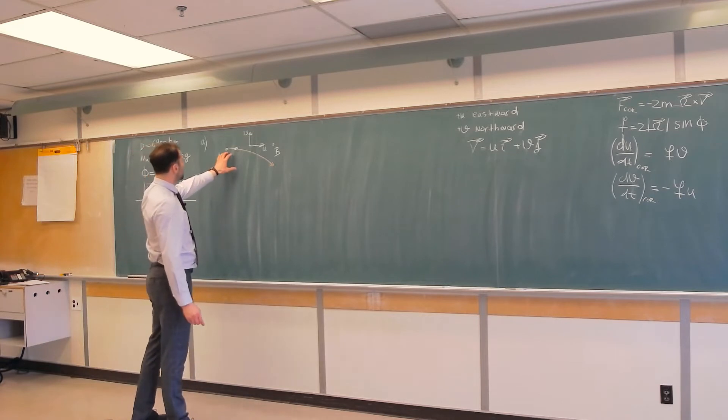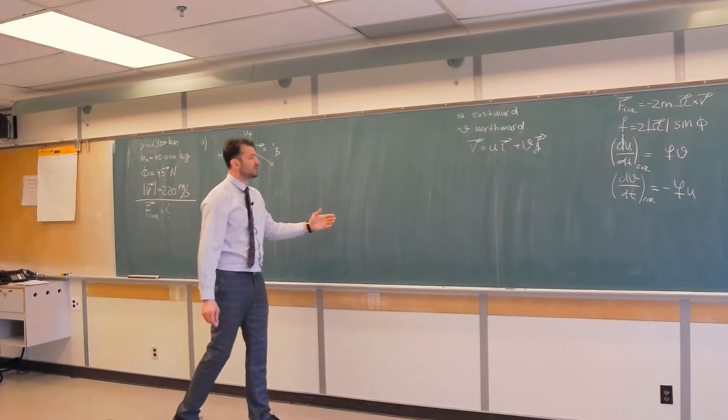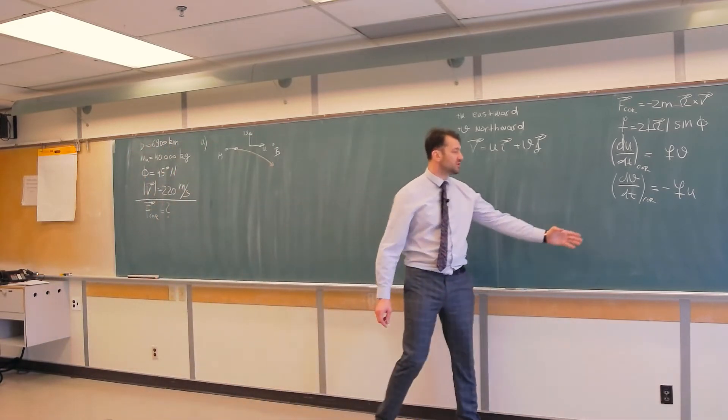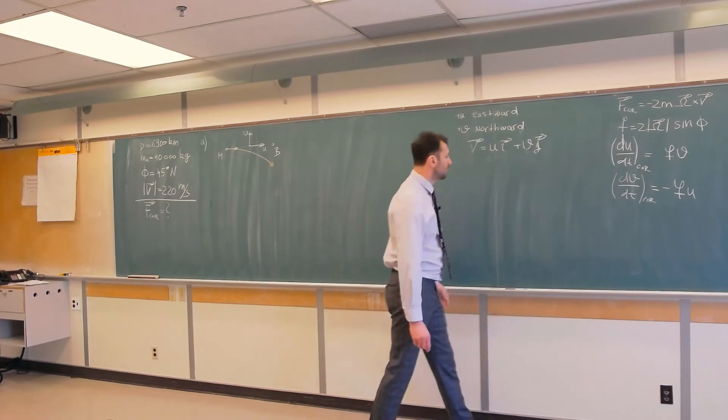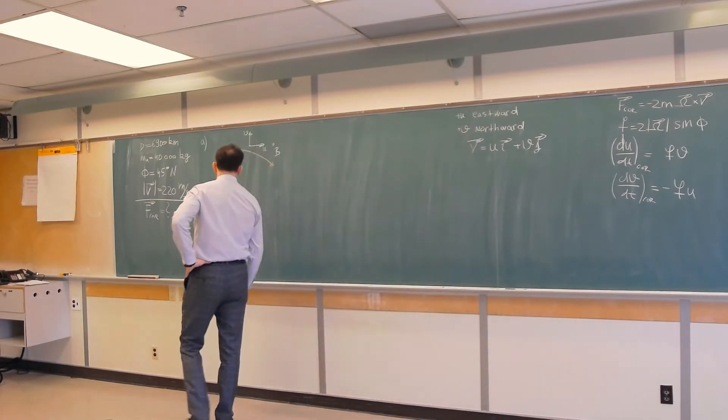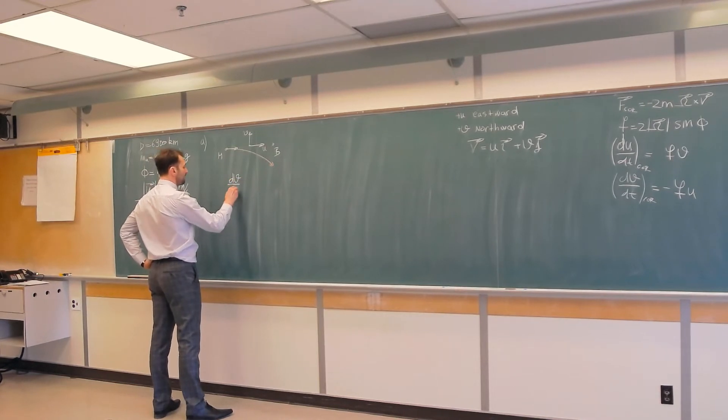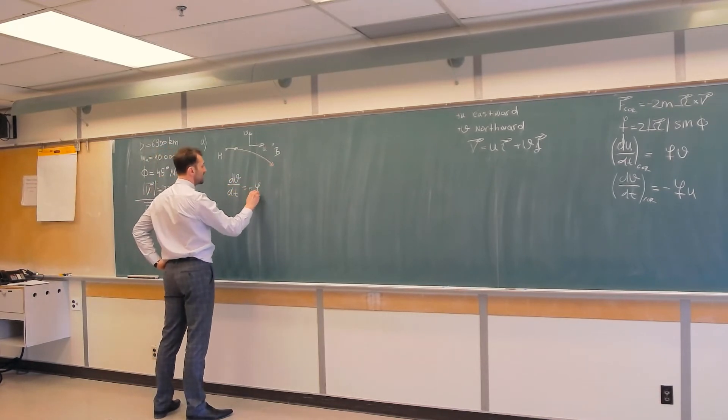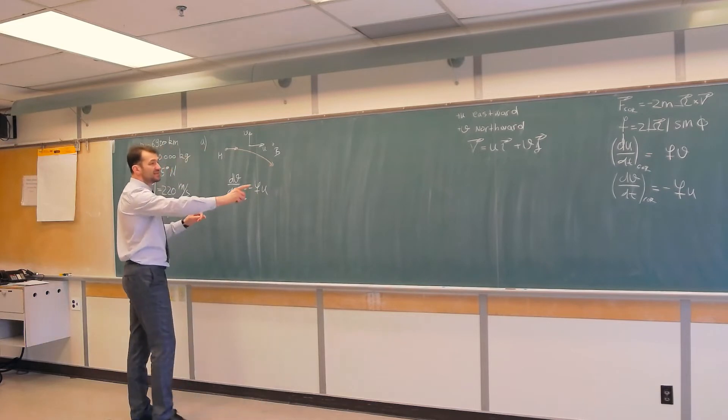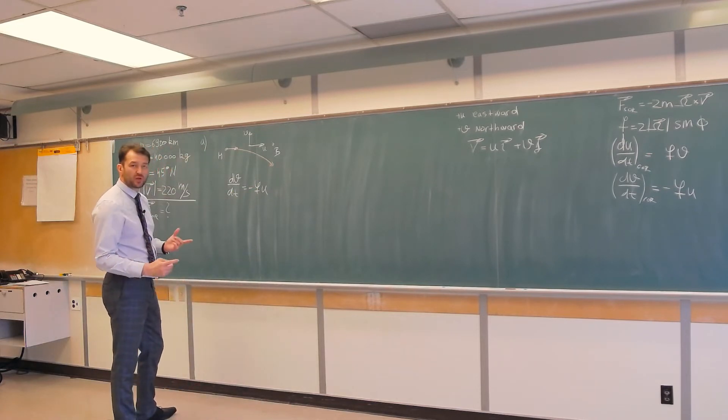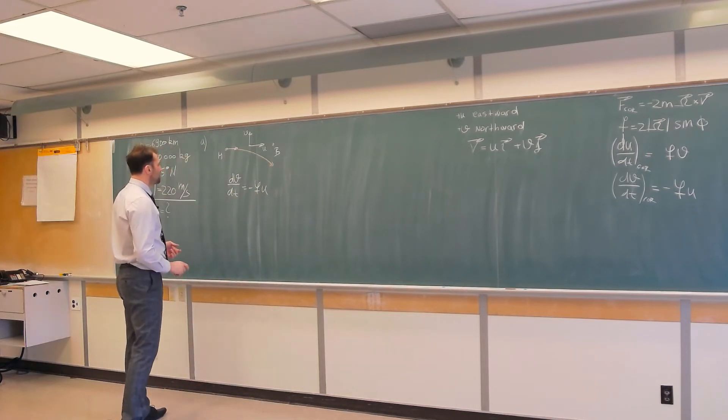Now, because motion is zonal at the beginning, to find meridional deflection, we use this equation. So the equation says dv/dt is minus fu. But this is acceleration.